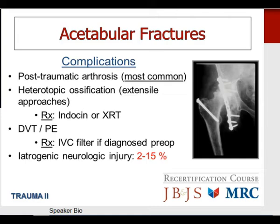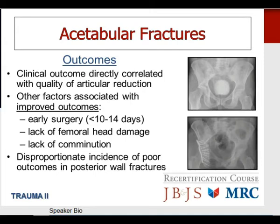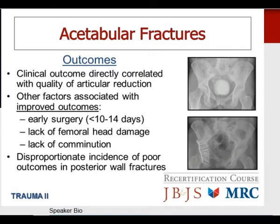Outcomes of acetabular fractures: the literature clearly supports that clinical outcome is directly correlated to the quality of the articular reduction — anatomic reduction of the weight-bearing dome is associated with improved clinical results. Other factors associated with improved outcomes include early surgery defined as less than 10 to 14 days post-injury, absence of femoral head damage, and absence of fracture comminution. There is a disproportionate incidence of poor outcomes in posterior wall fractures, believed to be due to comminution, marginal impaction, and shear chondral injury to the femoral head.